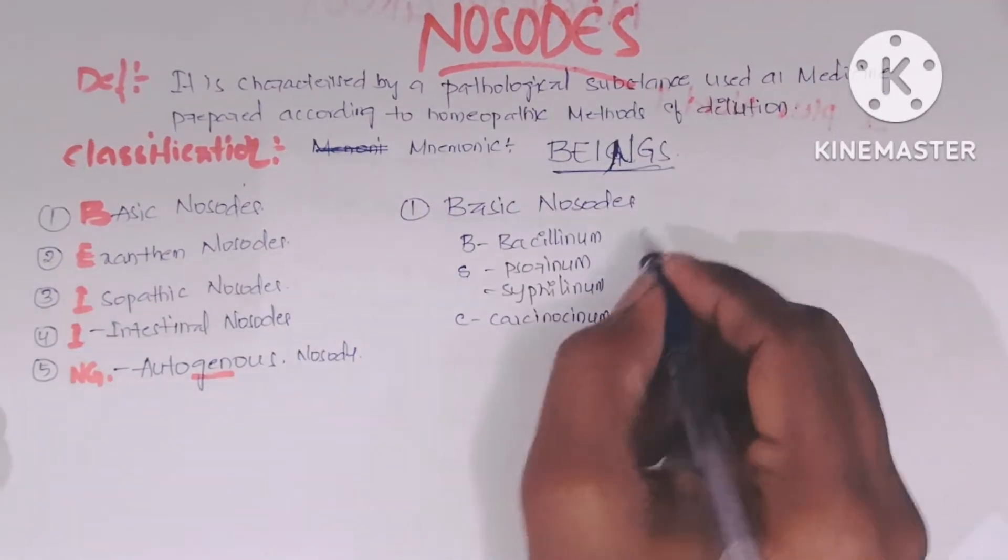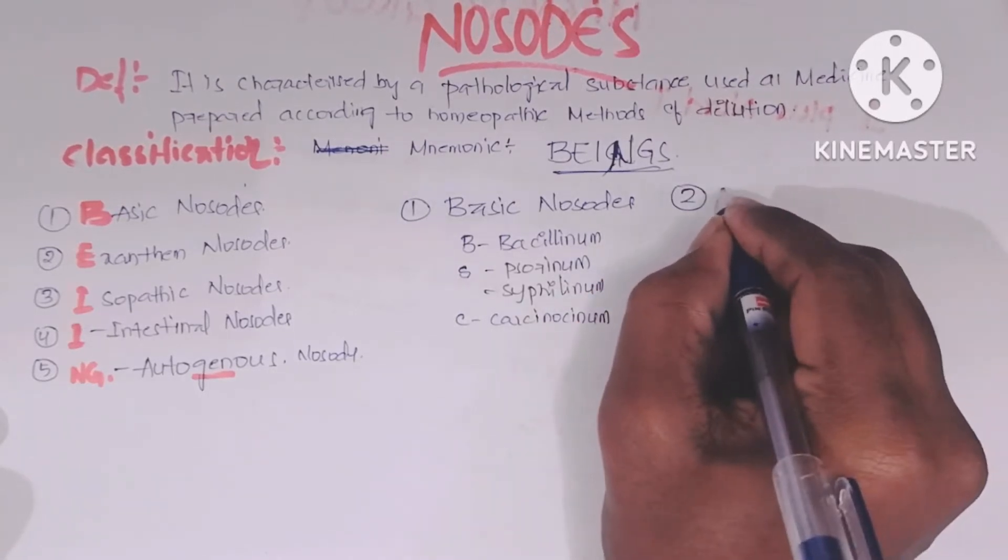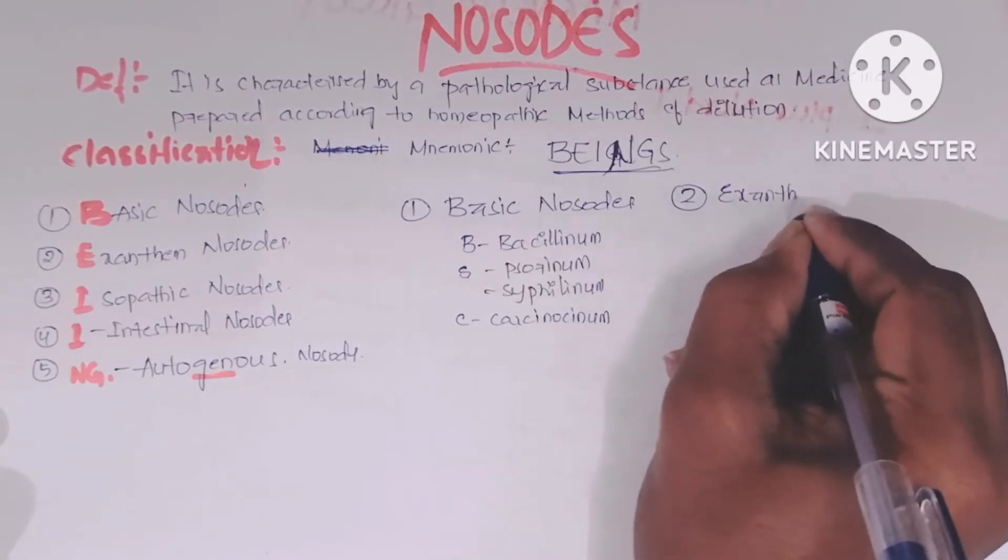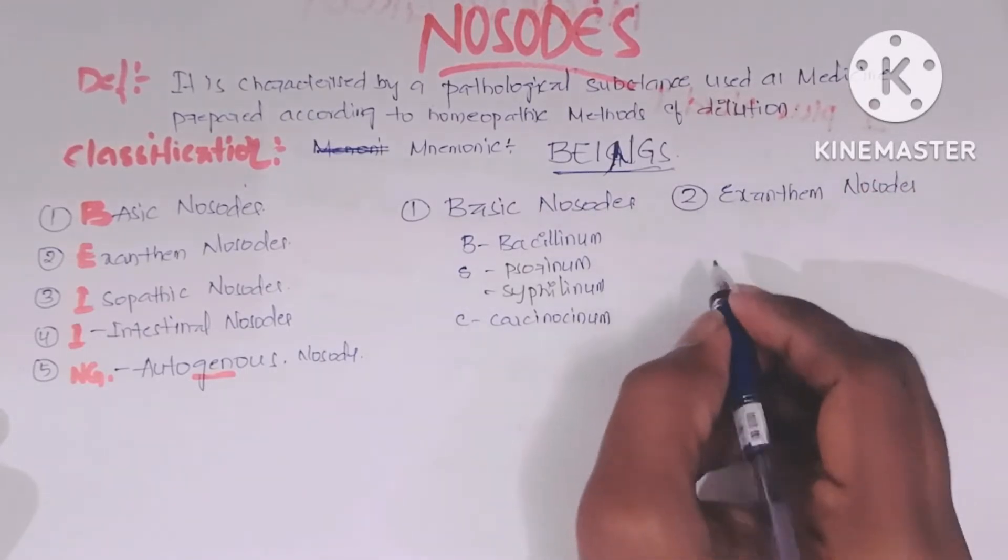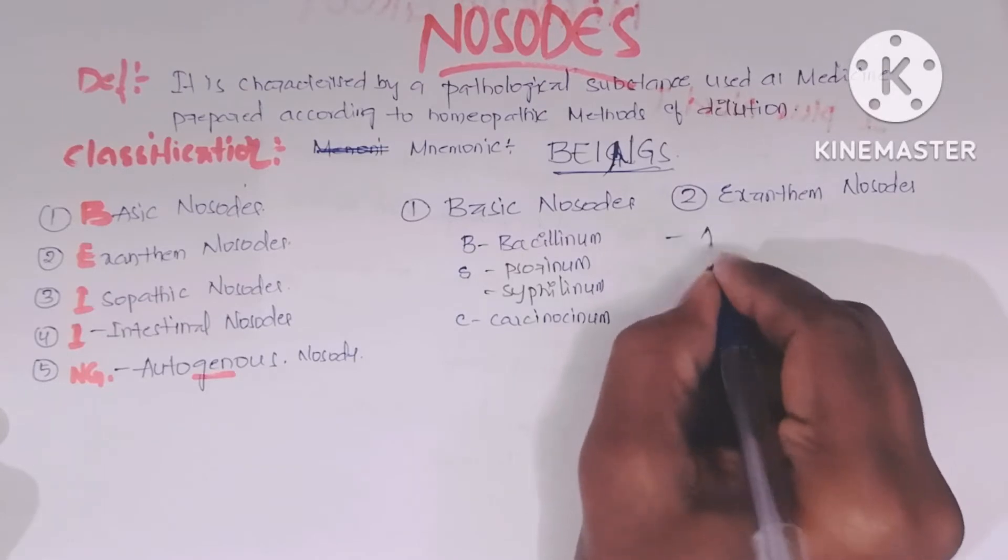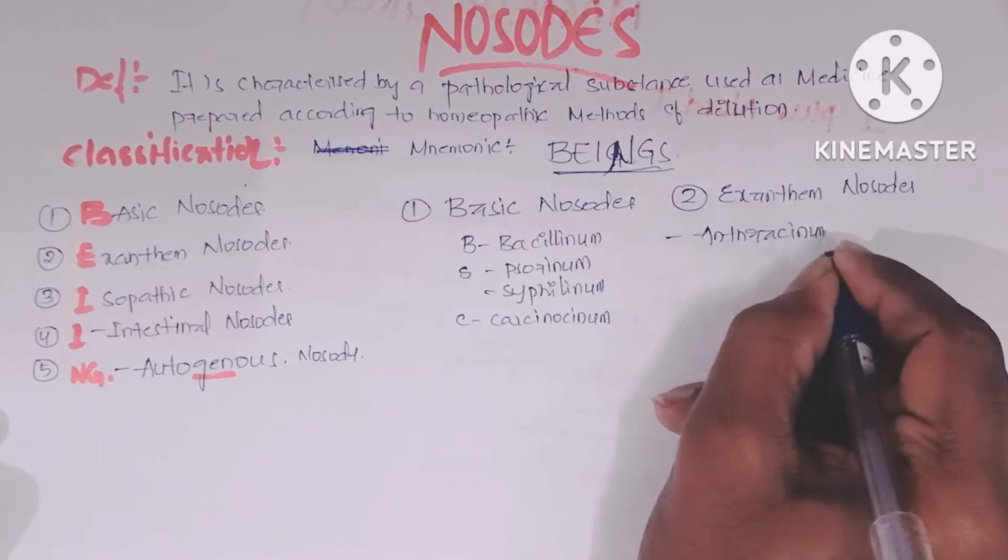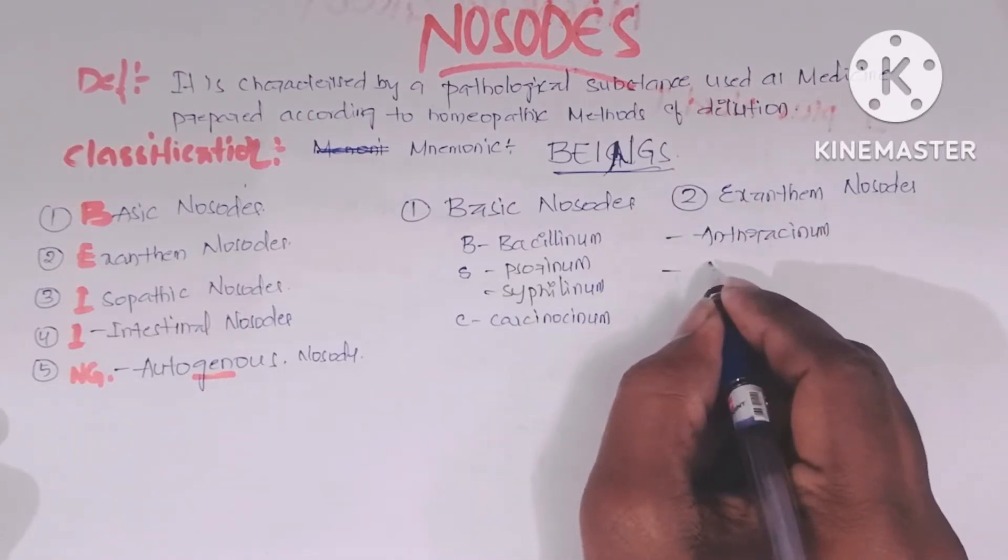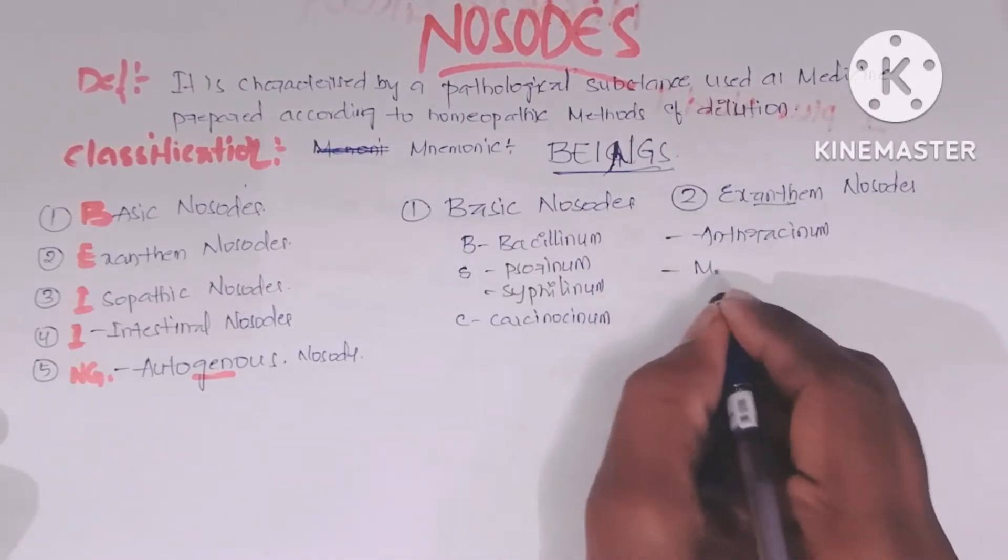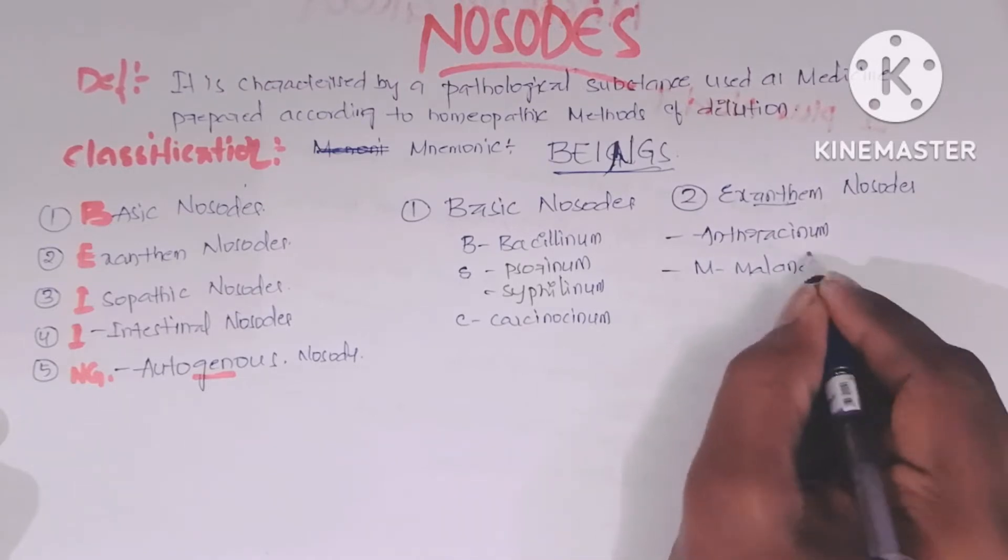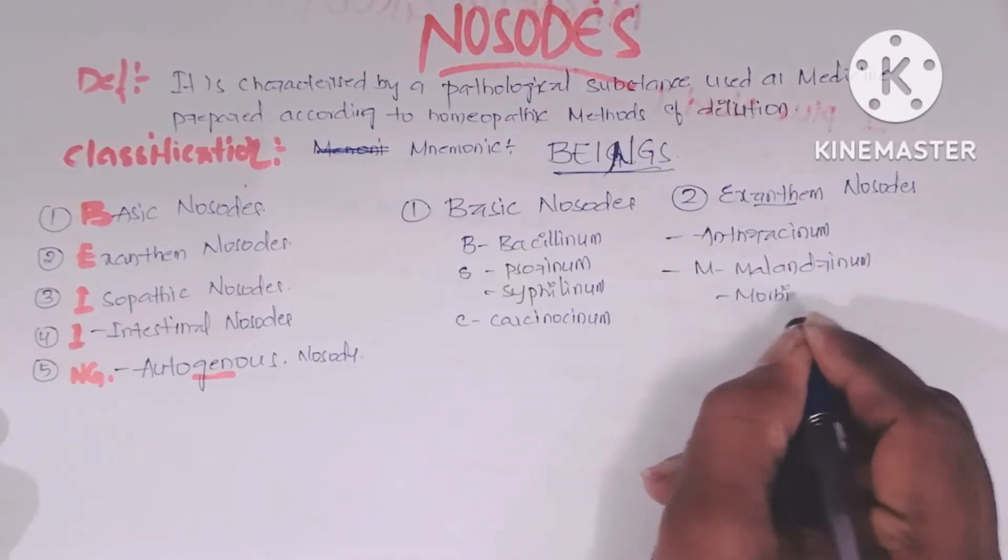In the Exanthema nosodes: A and N for Anthracinum, M for Malandrinum and Morbillinum.